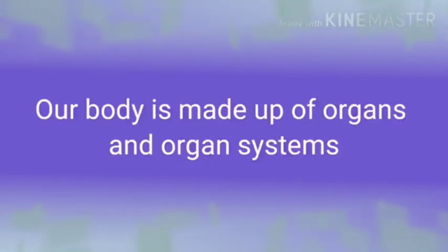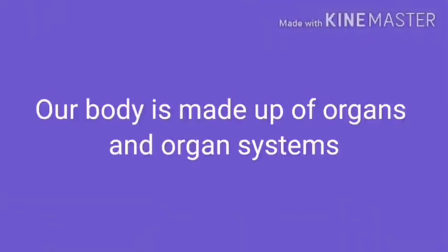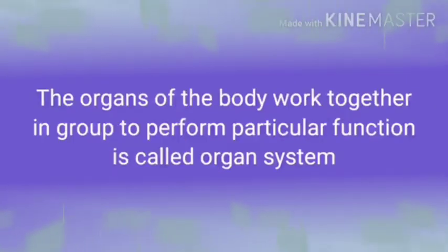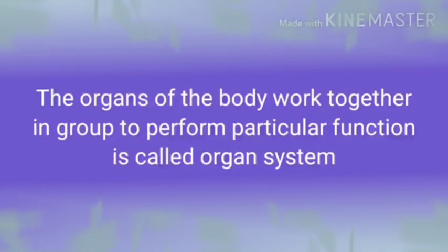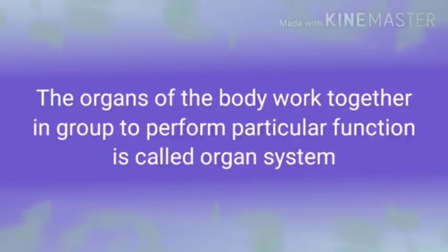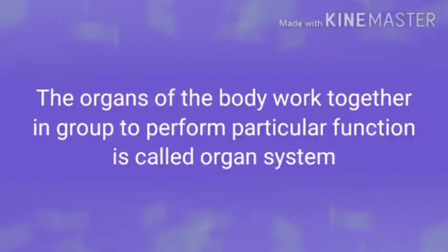Organs have specific functions to perform within the body. The organs of the human body work together for the body to function efficiently. The organs of the body work together in groups to perform a particular function — this is called the organ system. The organ systems in our body include the respiratory system, nervous system, skeleton system, reproductive system, excretory system, and so on. Different organ systems perform different functions in the body.